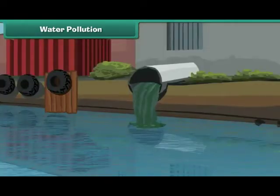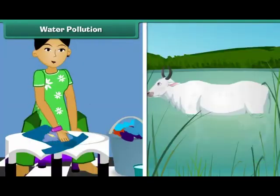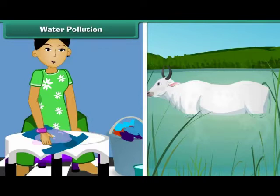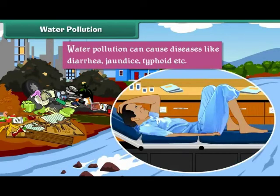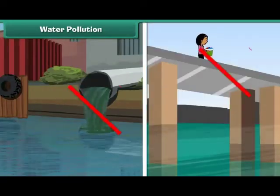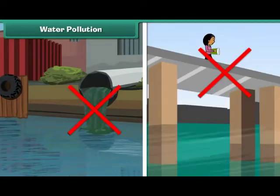Domestic and industrial sewage pollute water. Activities such as washing clothes and bathing animals in the rivers also cause water pollution. Water pollution can cause diseases like diarrhea, jaundice, typhoid, etc. We can reduce water pollution by preventing disposal of waste into water.